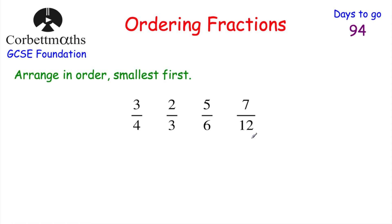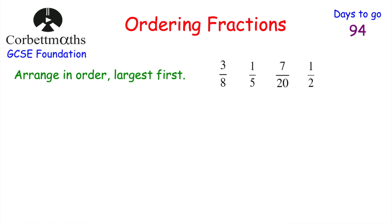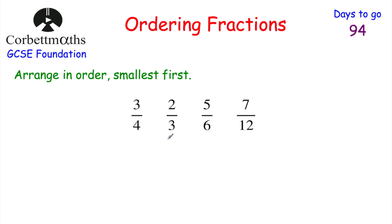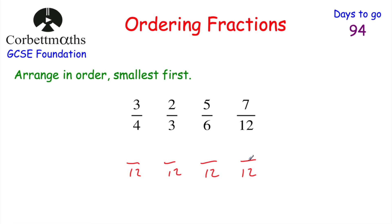Finally, ordering fractions. We have 3 quarters, 2 thirds, 5 sixths, and 7 twelfths — arrange starting with the smallest. Find a common denominator: the lowest common multiple of 4, 3, 6, and 12 is 12. Convert each: 3 quarters becomes 9 twelfths (multiply by 3), 2 thirds becomes 8 twelfths (multiply by 4), 5 sixths becomes 10 twelfths (multiply by 2), and 7 twelfths stays as 7 twelfths.